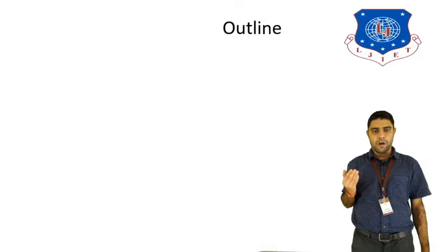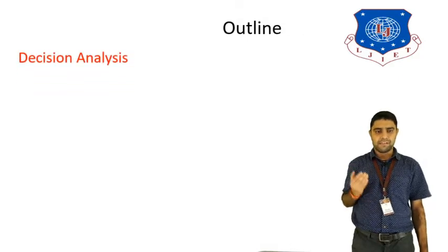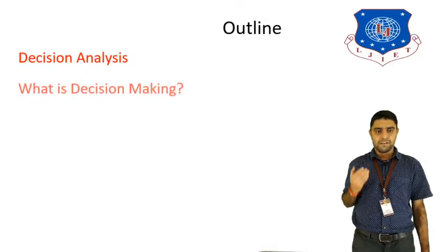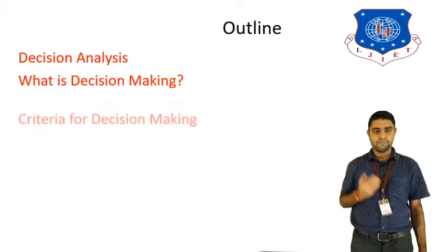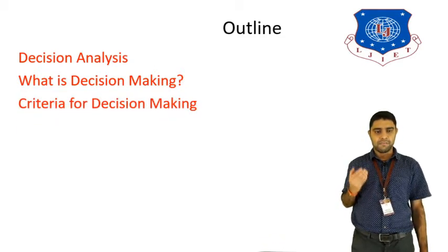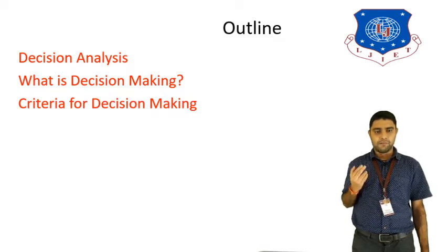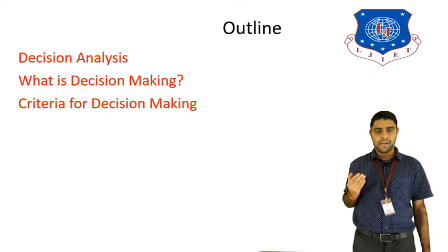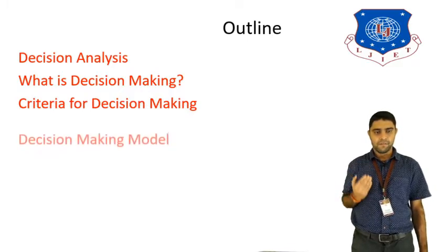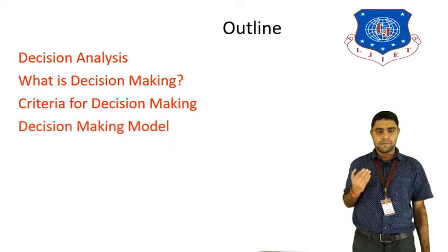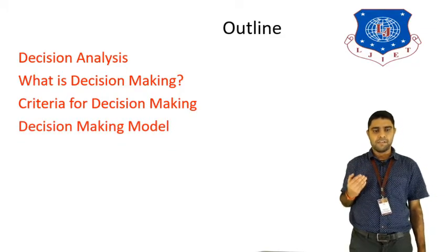The outline of today's lecture covers: what is decision analysis, what is decision making, and how decision making can be done. We will also look at the criteria for decision making — mainly two: decision making under risk and decision making under uncertainty. Finally, we will see the decision making model, including the steps for decision making.